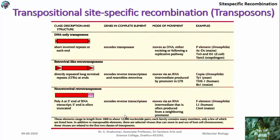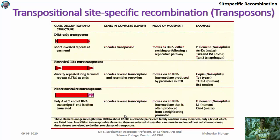Transpositional site-specific recombination can be explained with three different mechanisms: DNA-only transposons, retroviral-like retroposons, and non-retroviral retroposons. DNA-only transposons move DNA in the form of DNA. Retroviral-like retrotransposons convert RNA into DNA and then transpose. Non-retroviral retroposons transpose in the form of RNA. That is the major difference between these three mechanisms.